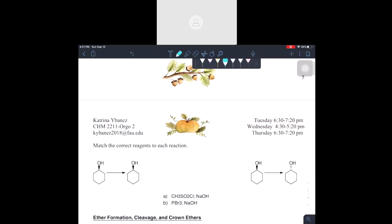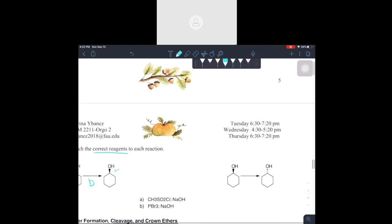Okay guys, so now let's just do a really quick practice problem. We're just going to match the correct reagents to each reaction. So as you guys can see wedged wedged, which protecting groups let us stay the same, was it the mesylate and tosylate or was it our PBr3?